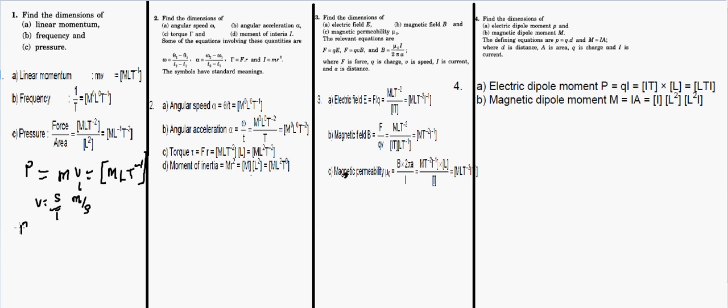Frequency equals 1 upon time period, so it can be written as T⁻¹. All other quantities will be zero, so the dimension of frequency is simply T⁻¹.